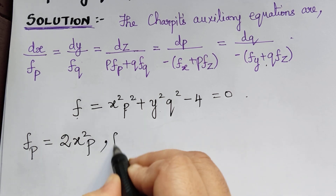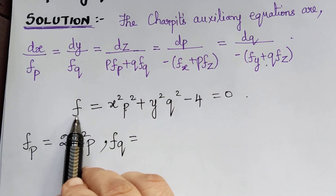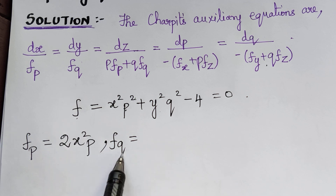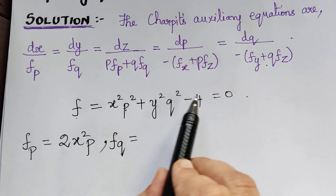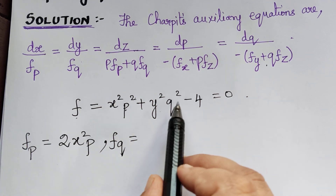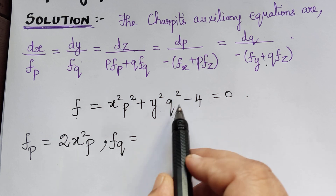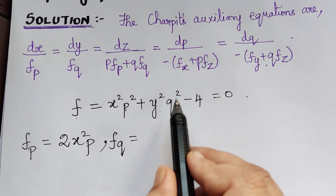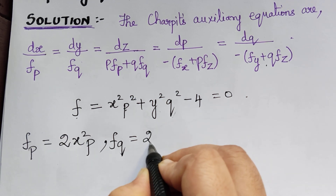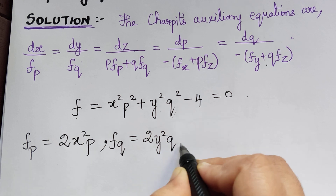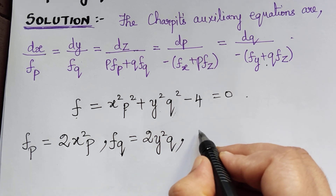Next we have to find Fq. When we partially differentiate F with respect to q, the other terms become 0, and the differentiation of q² is 2q. So we get Fq = 2y²q.